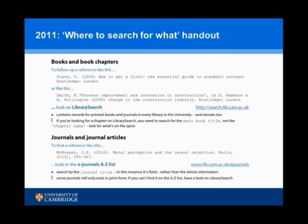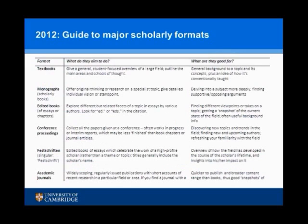Pre-summer, I had the most depressing handout in the world: 'Where to Search for What.' To find a book or a book chapter, you have to go here. To find a reference that looks like this — that's a journal — so you have to go somewhere else. But from 2012 onwards, I can stop that approach of 'you have to go here for this and here for that,' and I can start talking about what these things actually are.